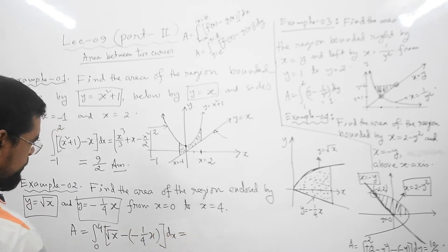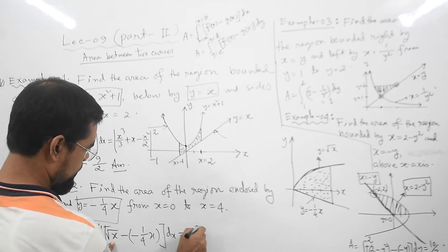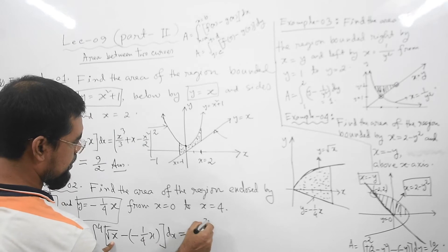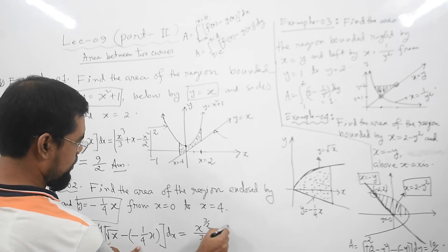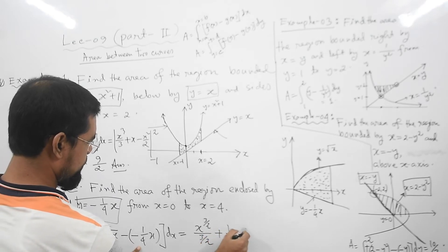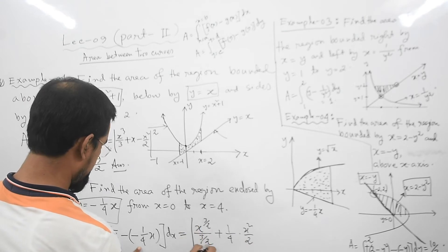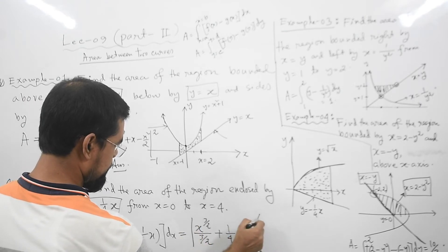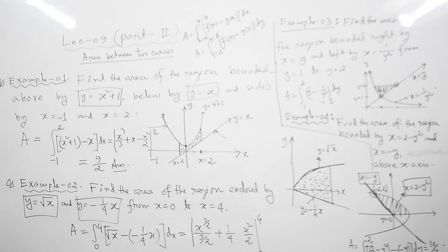Integrating from 0 to 4, the curve above is √x and the curve below is -x/4, so we integrate (√x - (-x/4)) dx. This gives x^(3/2) divided by 3/2, plus (1/4)(x²/2), evaluated from 0 to 4. The answer of this problem is 22/3.